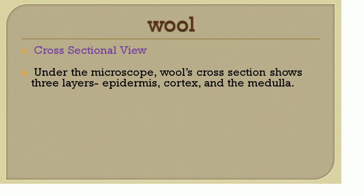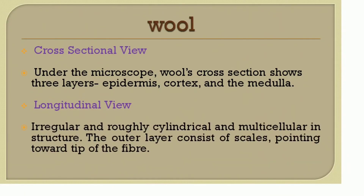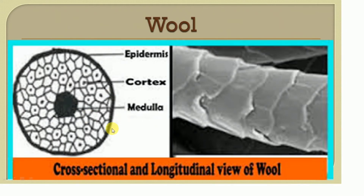Wool fiber in cross-sectional view shows three distinct layers: the epidermis, cortex, and medulla. In longitudinal view, it is irregular in surface, cylindrical, and multicellular in structure. The outer layer consists of scales pointing towards the tip of the fiber, which makes wool easy to identify. In the microscopic view, the three layers are clearly visible in cross-section, and the scale structure of the outer layer is clearly seen in longitudinal view.